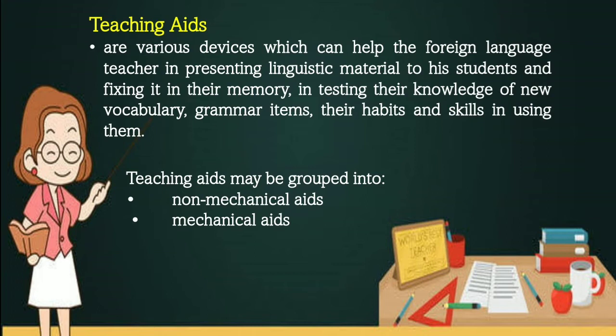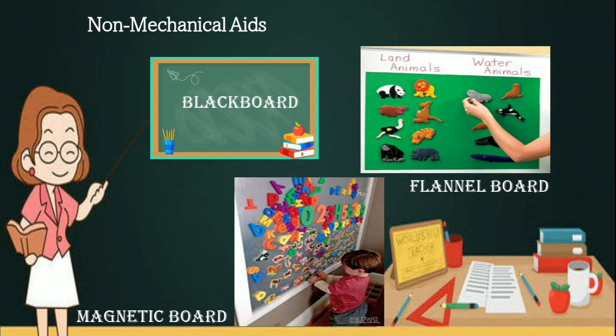Non-mechanical aids represent a traditional way of teaching. First is the blackboard, the oldest aid in the classroom, commonly used for writing. Second is the flannel board — a board covered with flannel or other soft fabric for sticking pictures on its surface, used for creating vivid situations to stimulate pupils' oral language. The last one is the magnet board, which has the properties of a magnet and can attract special cards with letters, words, phrases, or pictures. The magnet board serves the same purpose as the flannel board.